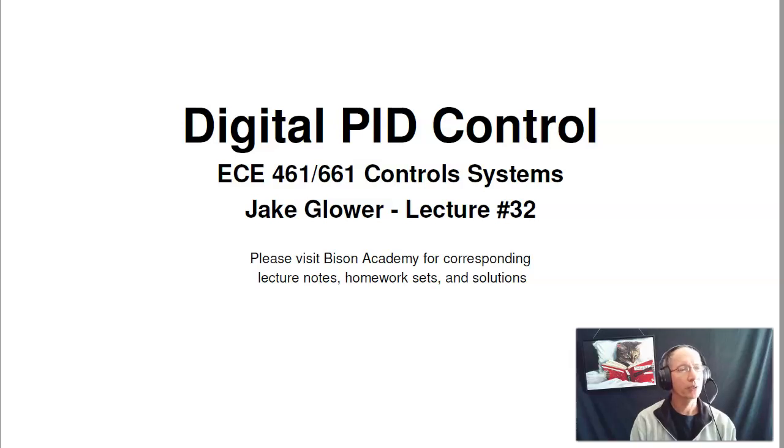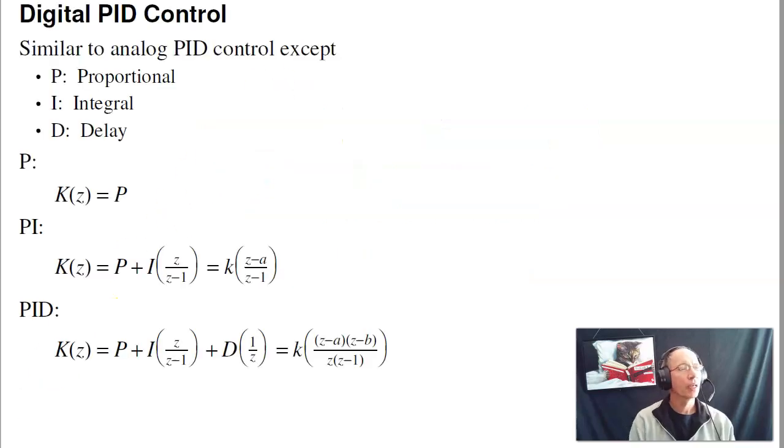Welcome to lecture number 32 for ECE461 Control Systems, Digital PID Control. In the past we looked at analog PID control where that's proportional integral derivative. There's a similar controller in discrete time. However in discrete time the PID represents proportional integral and delay. The reason being is derivatives are actually hard to calculate and are very noisy. But with a microprocessor delay is actually really easy.